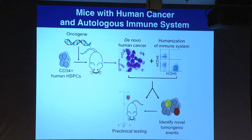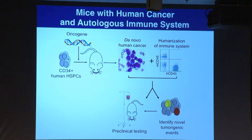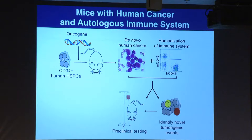This model can be used to evaluate potential cancer immunotherapeutics, study human immune cell–cancer cell interactions, and also study early events of human tumorigenesis. Because by the time a patient shows up in hospital, the early event has already occurred. By regenerating the tumor de novo in the mouse, we can potentially study those early events.